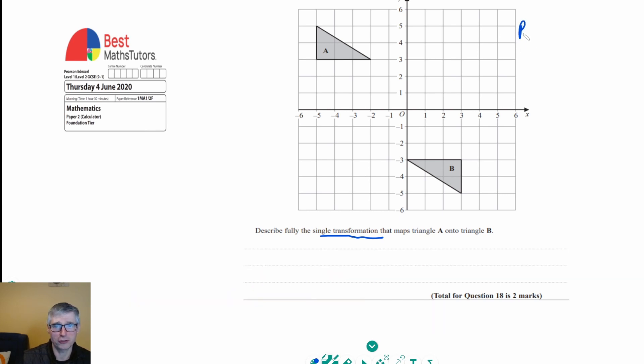What there are is rotations, translations, enlargements, and reflections. So we've got to decide which one of these it is.